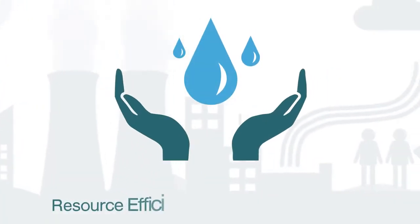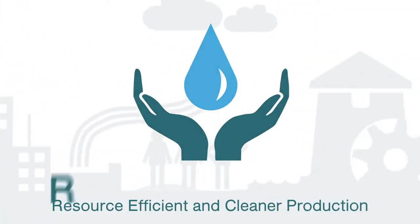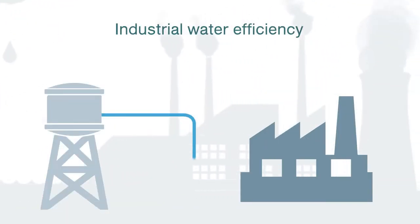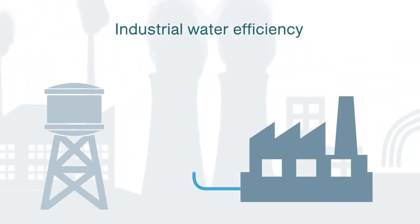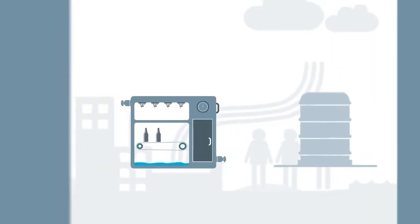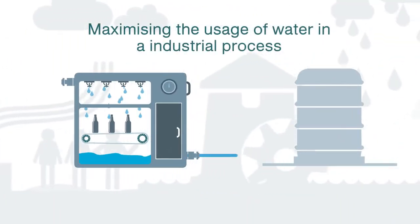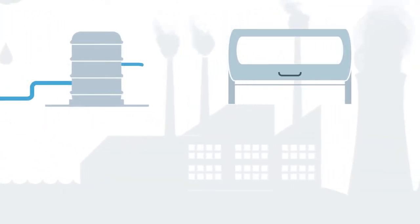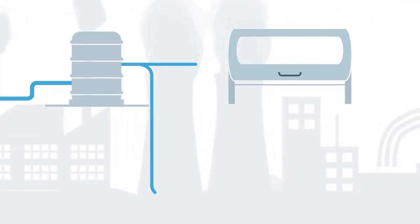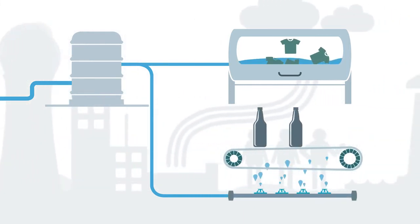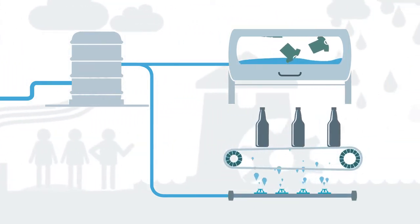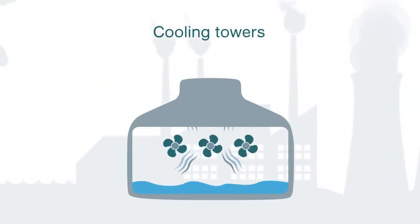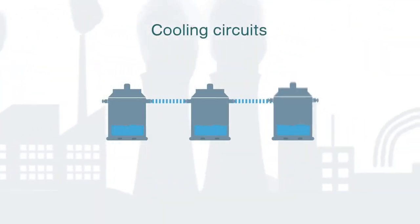Water efficiency is an important element of Resource Efficient and Cleaner Production, or RECP. Industrial water efficiency is about maximising the usage of water in an industrial process in order to achieve more with the same water load. This approach allows the same water to be used more than once and for multiple purposes, like reusing rinsed water for lower-grade cleaning processes, via alternate applications such as cooling towers or circuits.